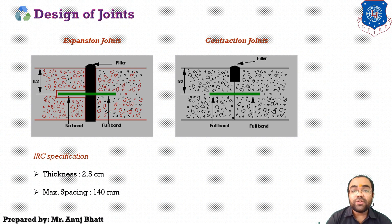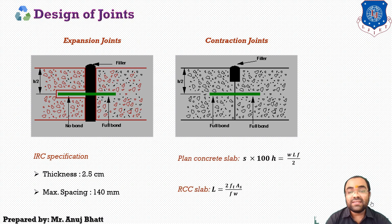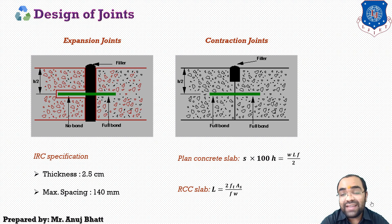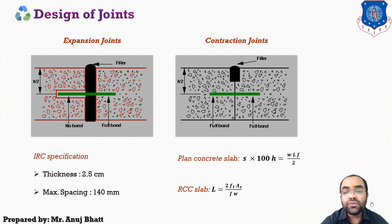Contraction joints are applicable for two different slabs: the plain concrete slab and the RCC slab. For the plain concrete slab, the contraction of the slab is resisted by the friction between the bottom of the slab and the subgrade. For the contraction joint, the total tension in the cement concrete is considered equal to the frictional resistance of the subgrade up to the center.